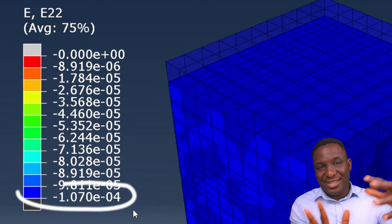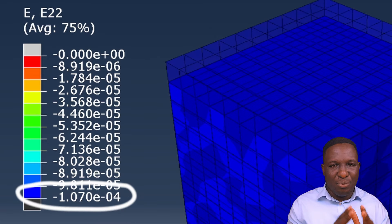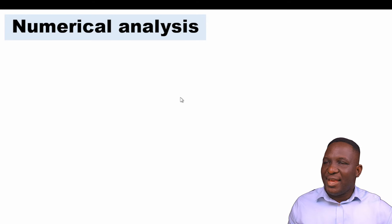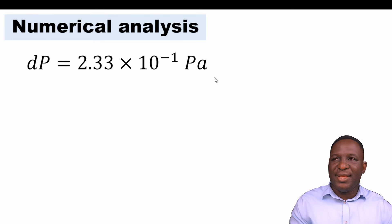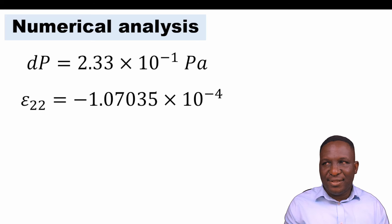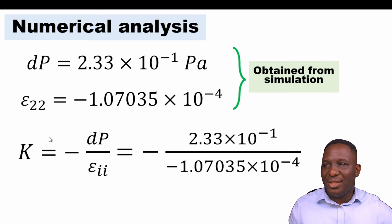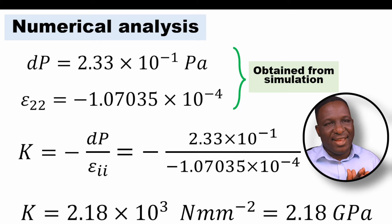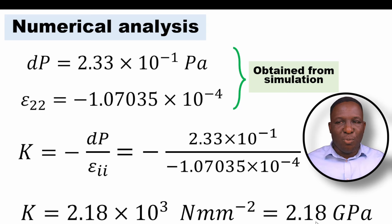We're interested in the maximum strain and the maximum average homogenized pressure within the system. With this data: the change in pressure is 2.3×10⁻¹ N/mm², and the strain is 1.07×10⁻⁴. Putting that into K = dP/strain gives 2.18×10³ N/mm². Converting to SI units by multiplying by 10⁶ gives 2.18 gigapascals — that is the numerically determined bulk modulus for this material.